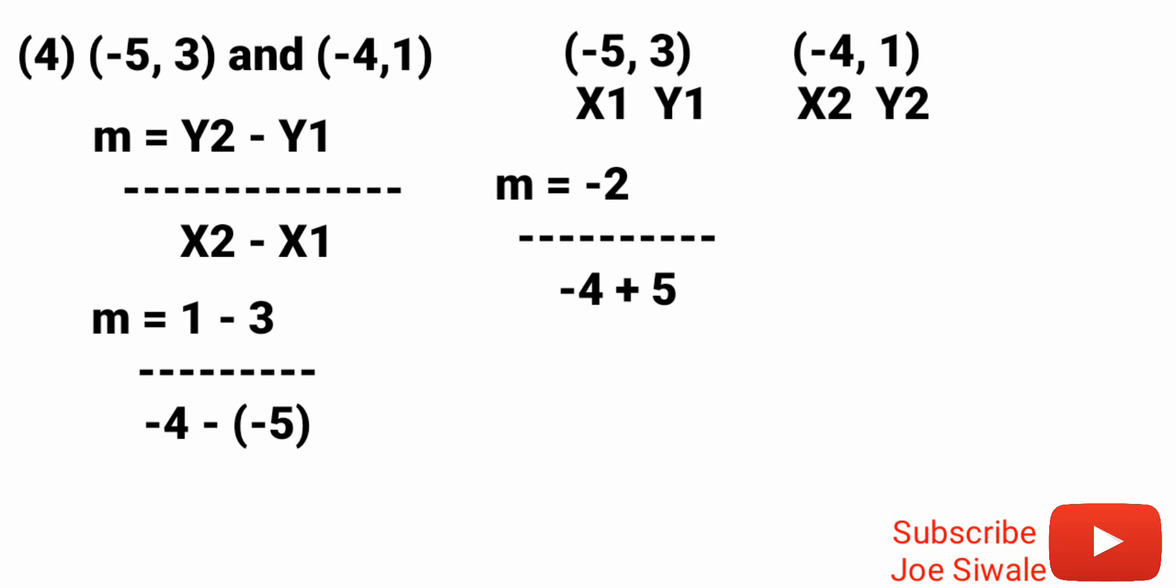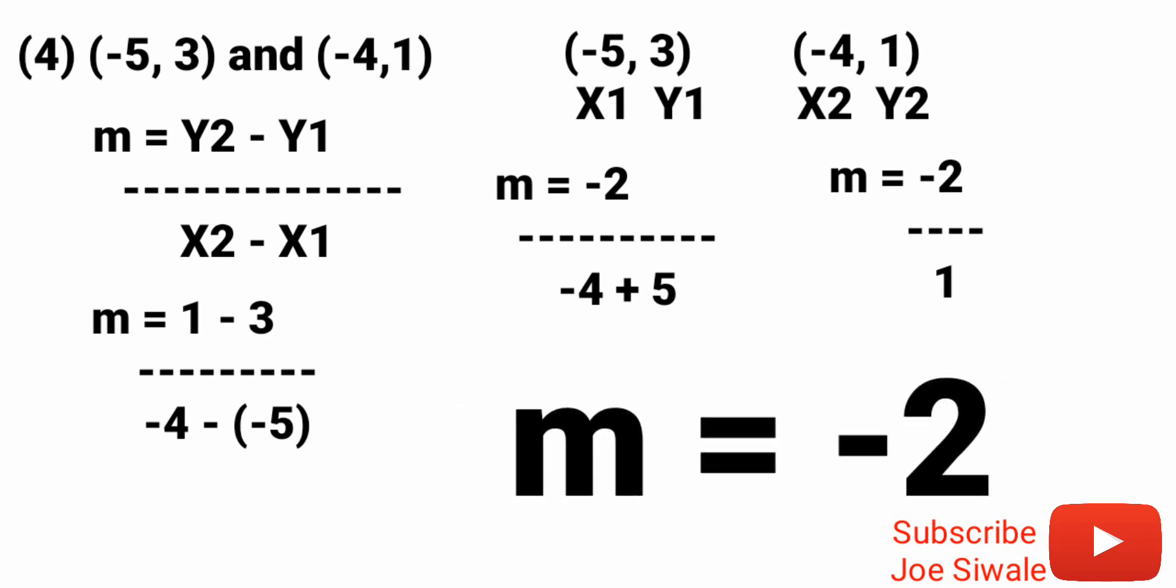Minus minus 5, the sign will change to a positive, so on the denominator I'm going to have negative 4 plus 5. Then I'll say gradient equals negative 2 divided by negative 4 plus 5, that's 1. The gradient equals negative 2 divided by 1, that's negative 2.